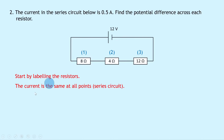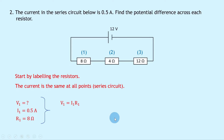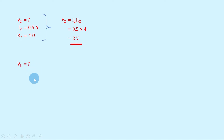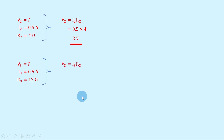To find V1, I1 is 0.5 amps and R1 is 8 ohms. Using V1 equals I1 R1, substituting gives 0.5 times 8 which equals 4 volts. For resistor 2, V2 equals I2 R2 gives 0.5 times 4 which equals 2 volts. For resistor 3, V3 equals I3 R3 gives 0.5 times 12 which equals 6 volts.